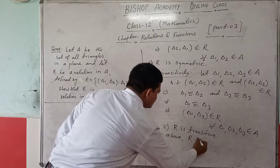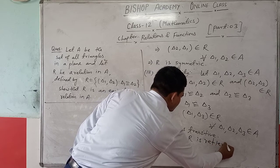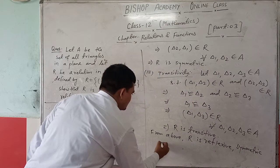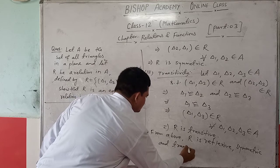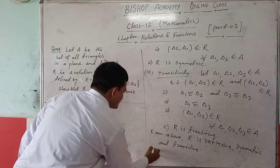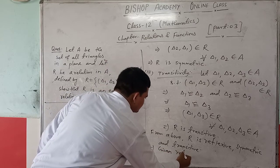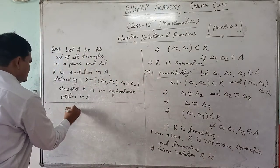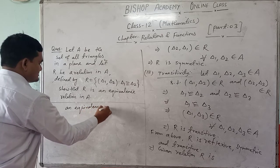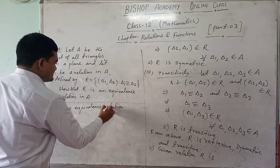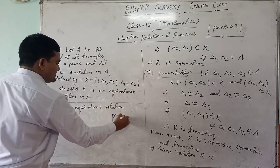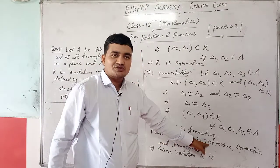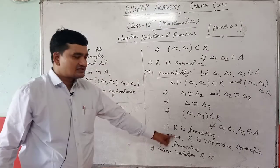From the above, R is reflexive, symmetric, and transitive. This implies that the given relation R is an equivalence relation. This is very important — we have an equivalence relation because it satisfies the reflexive property, symmetric property, and transitive property.